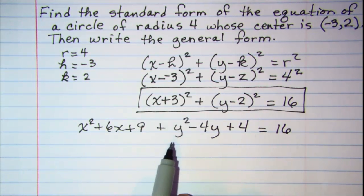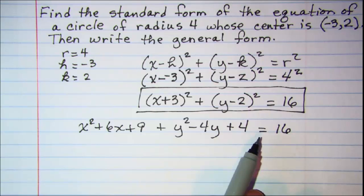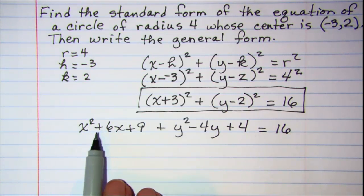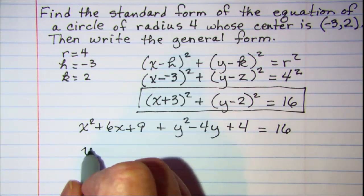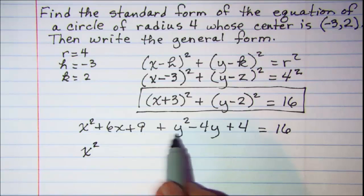Now general form requires that everything is put on one side of the equation, and for a circle our highest powers, our x² is first, and then our y²,